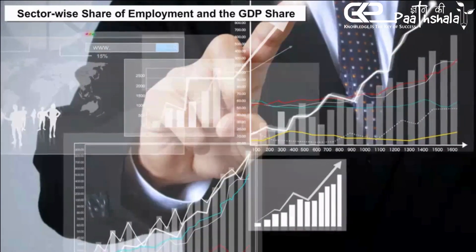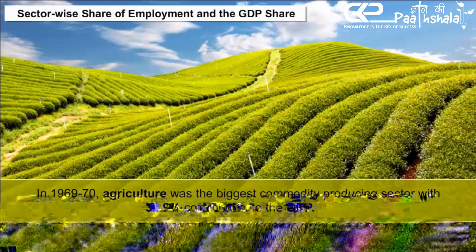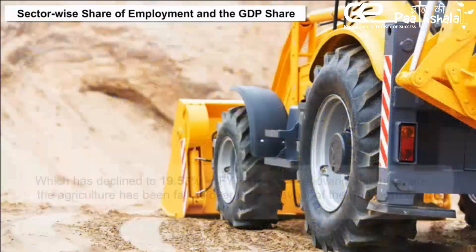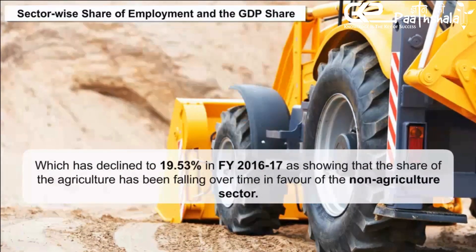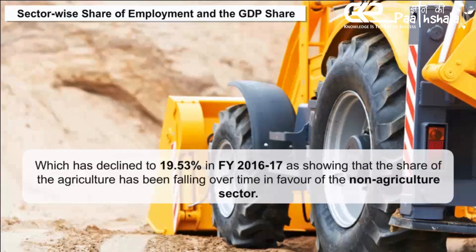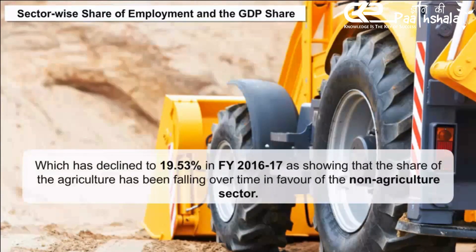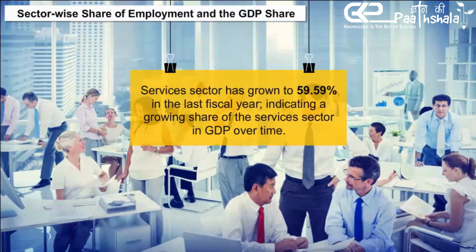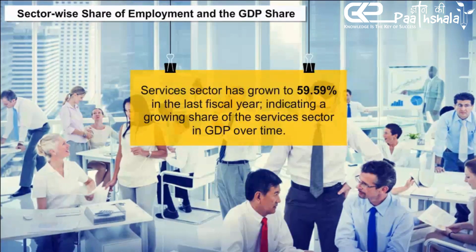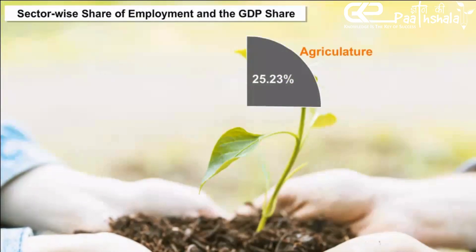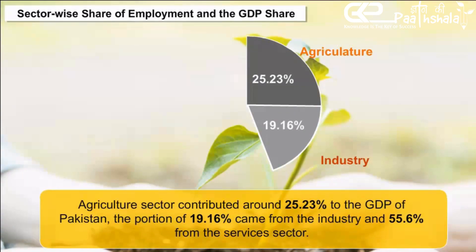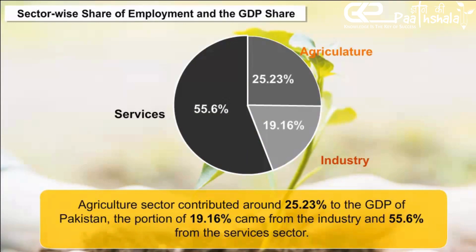Sector-Wide Share of Employment and GDP Share. In 1969–70, agriculture was the biggest commodity-producing sector with 38.9% contribution to GDP, which has declined to 19.53% in financial year 2016–17, showing that the share of agriculture has been falling over time in favour of the non-agriculture sector. The share of the services sector has grown to 59.59% in the last fiscal year. In 2016, the agriculture sector contributed around 25.23% of Pakistan's GDP, with 19.69% from industry and 55.6% from the services sector.